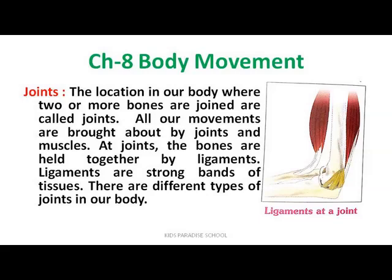At joints, the bones are held together by ligaments. Ligaments are the strong bands of tissues. There are different types of joints in our body. The two or more bones are linked by ligaments. This is how our movement is possible.